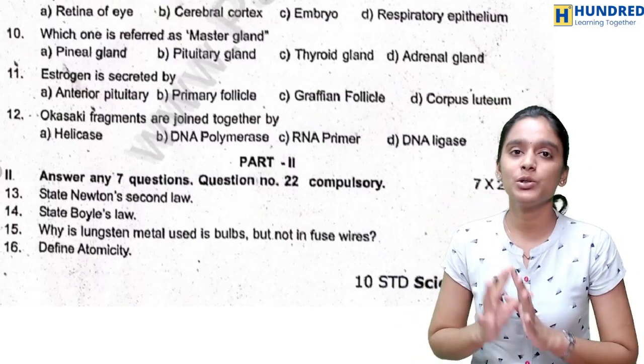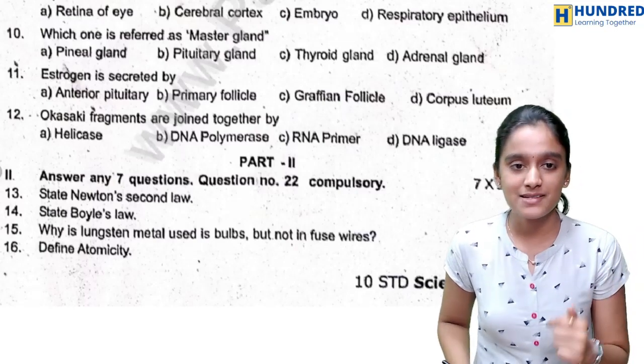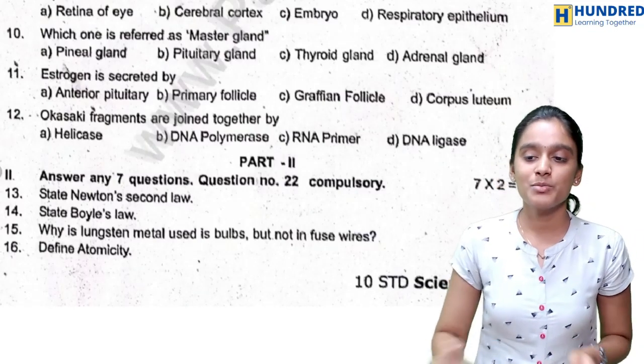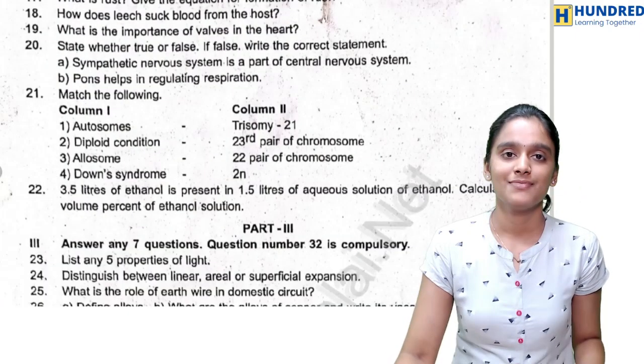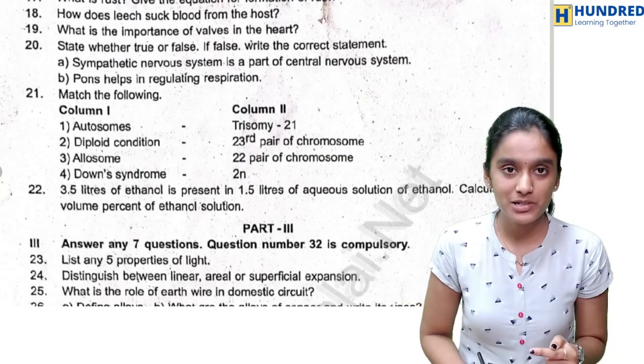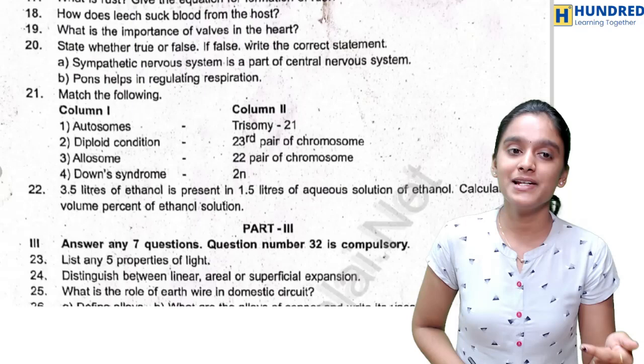You should write the answer. And why is tungsten metal used in bulbs and not in fuse wires? Define atomicity. These are all you have in Part 2. And next is 17th question: What is rust? Give the equation for formation of rust. And 18th question, you have to start a biology question.